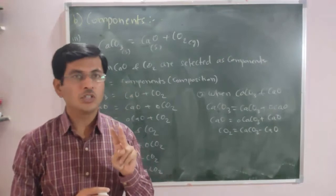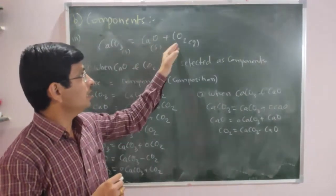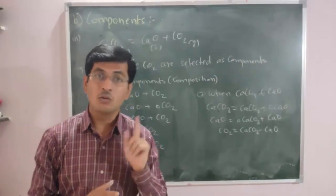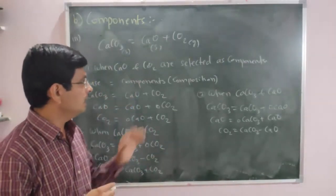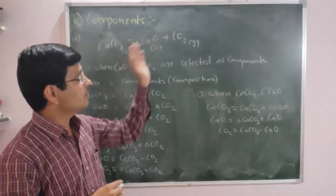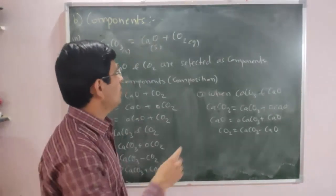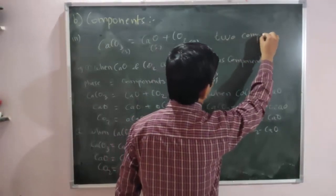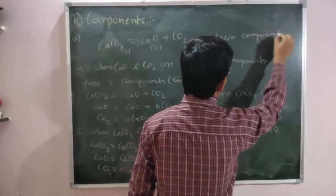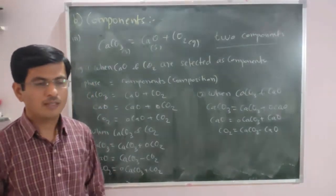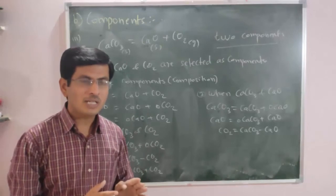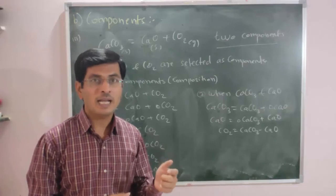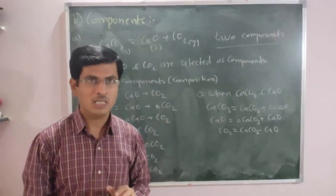By considering any two constituents out of the three (CaCO3, CaO, CO2), we can select two constants to explain the composition of all three phases. Therefore, this is also a two-component system. Such examples help us identify the number of components in a given system.